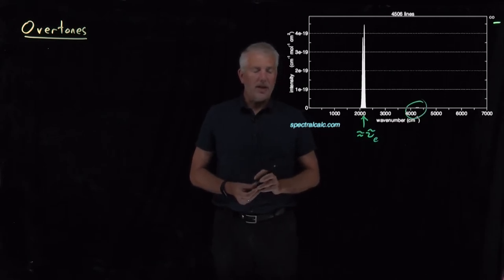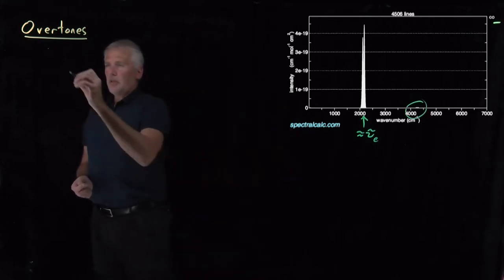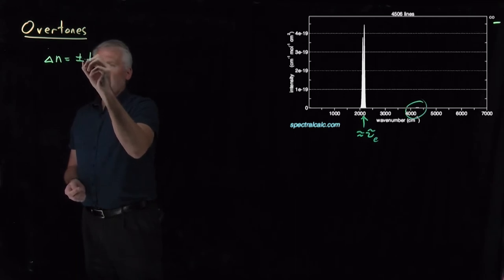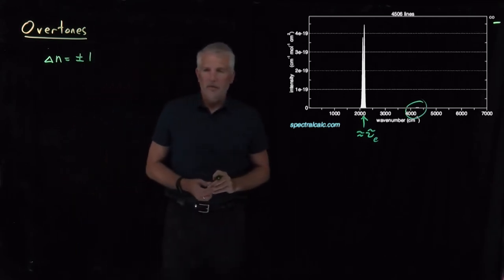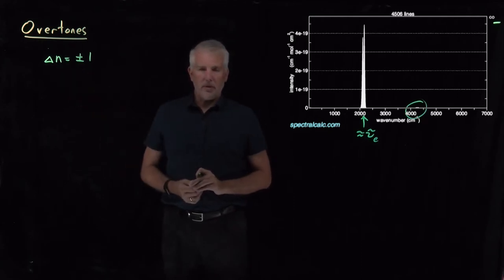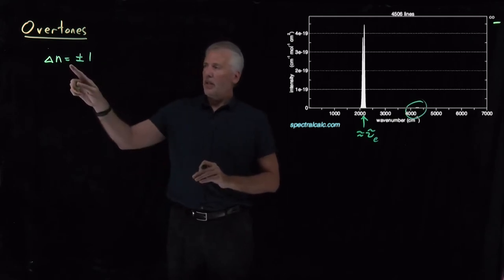That's a feature of the anharmonicity of the molecule. So to start out, let's recall the selection rule for the harmonic oscillator. When we're changing vibrational levels for a harmonic oscillator, the selection rules tell us that the quantum number has to change by either plus 1 or minus 1. I can go up one level on the energy ladder, or I can fall down one level, but that's all the harmonic oscillator is allowed to do if I'm using light to make the transition.